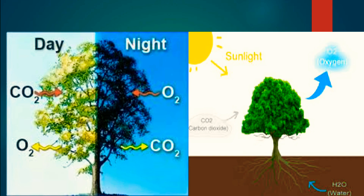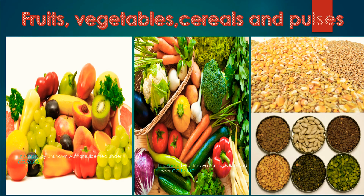Plants give us food like fruits, vegetables, cereals and pulses. We eat different parts of plants like roots, stem, leaves, fruits and flowers.